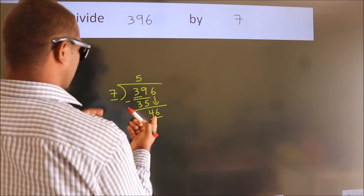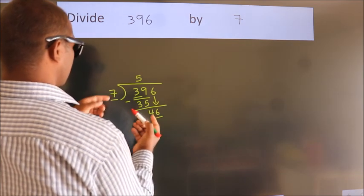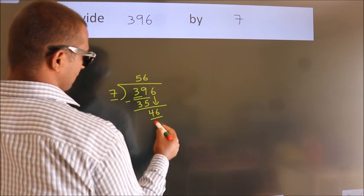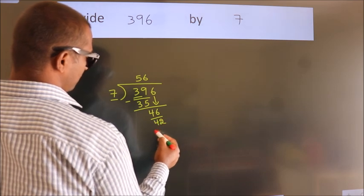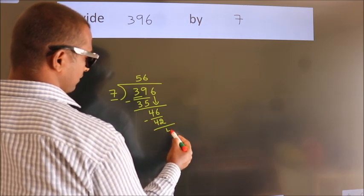A number close to 46 in the 7 table is 7 sixes, 42. Now we subtract. We get 4.